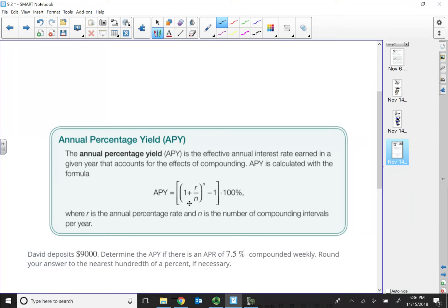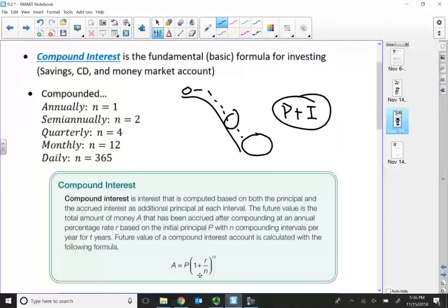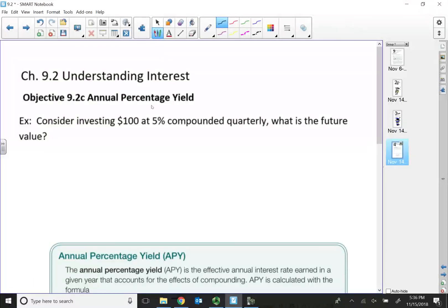So APY is calculated with this particular formula. Do you see this 1 plus R over N part? That is actually part of our compound interest formula. So exactly what is an annual percentage yield, it goes like this.